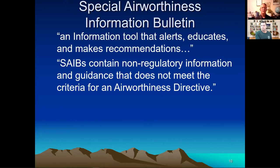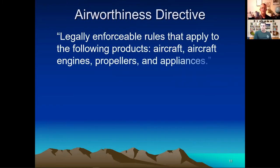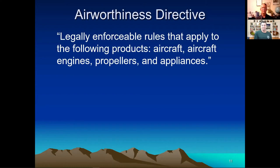The next level up is an airworthiness directive. Depending on the issue, it can be serious. For example, a few years ago there was a propeller shop using bad parts in overhauls — they came out with an emergency AD saying you had to replace or re-overhaul that propeller. It ranges all the way up to something like the Boeing 737 MAX, where they grounded the entire fleet for two years. That was an emergency airworthiness directive — that's the other end of the spectrum.